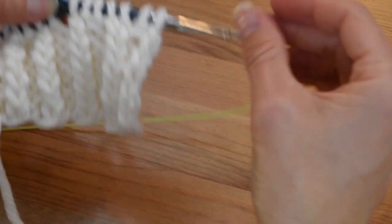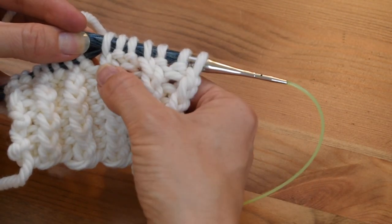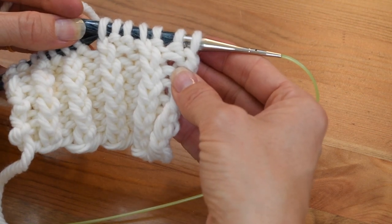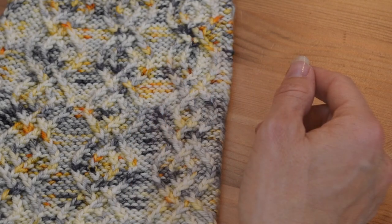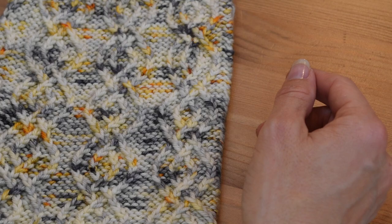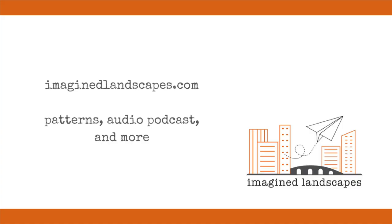Purl one, knit one through the back loop. So now these two stitches have moved over, and that's how we get this kind of detailed work. Don't forget to check out the other three videos I have about the other common twisted stitch cable types. I hope this has helped. Learn more about me and my patterns at ImagineLandscapes.com.